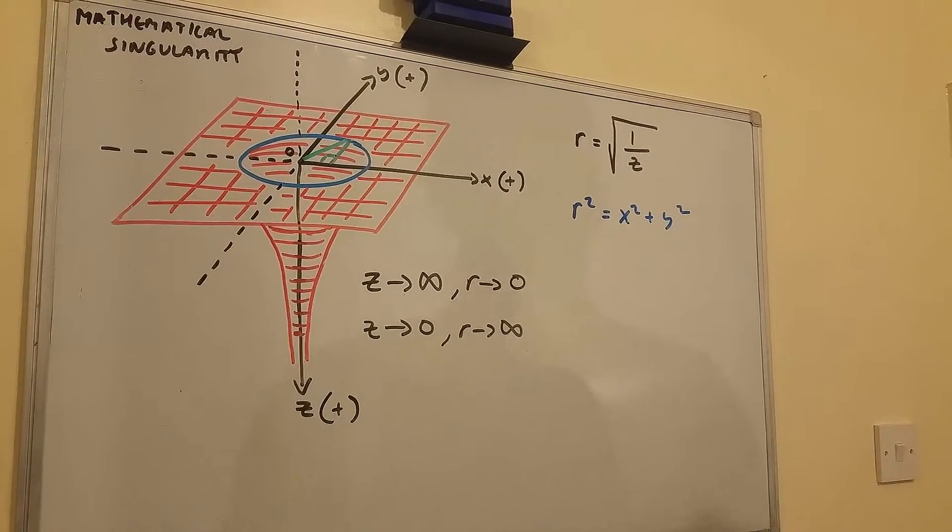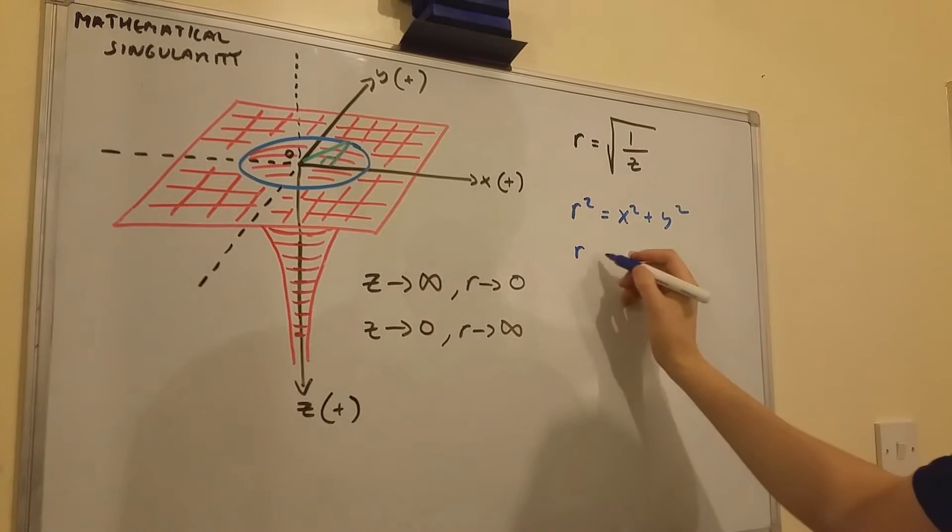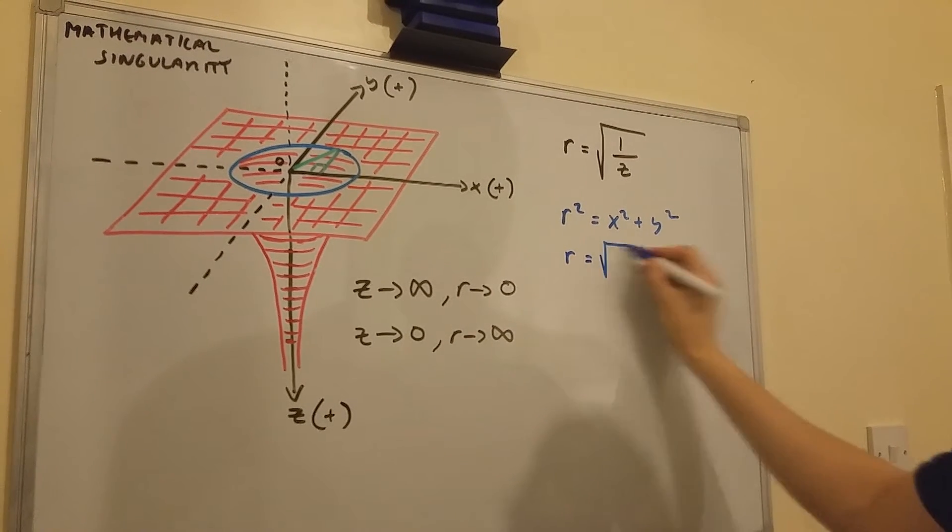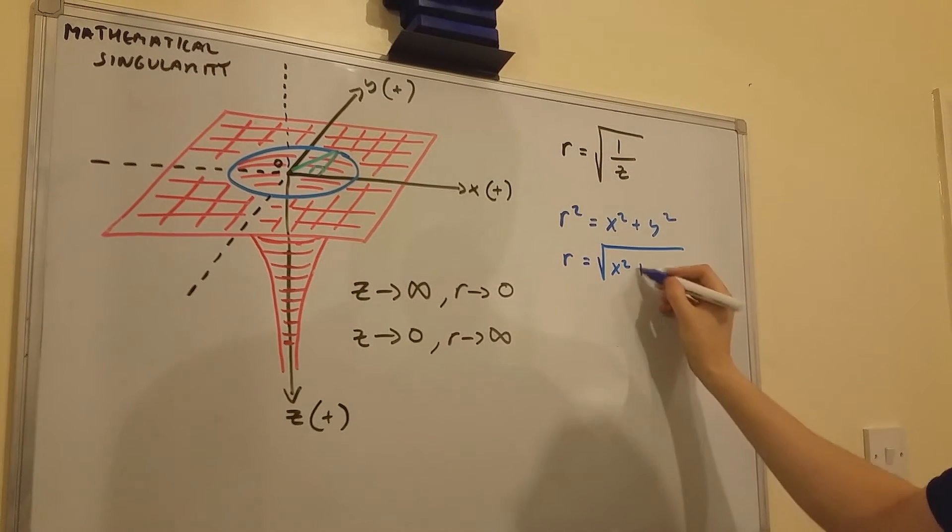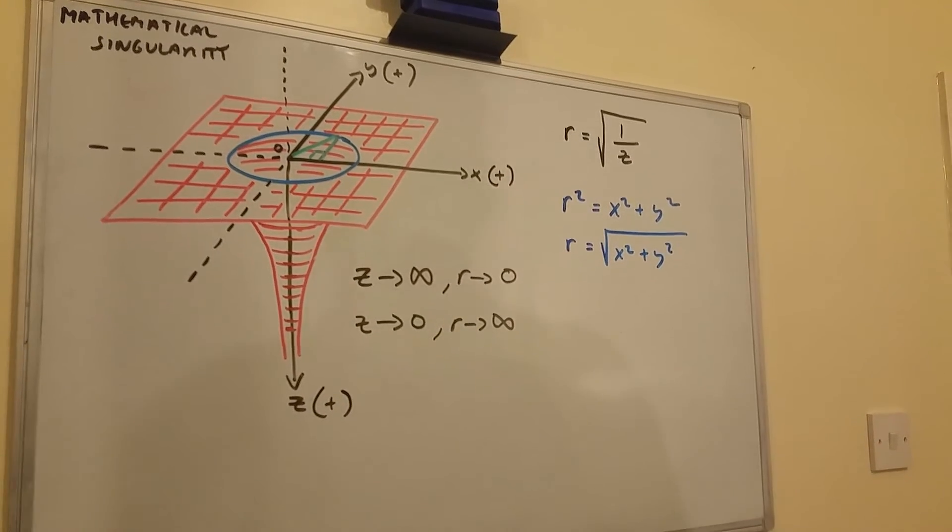Therefore r itself is equal to the square root of x squared plus y squared.